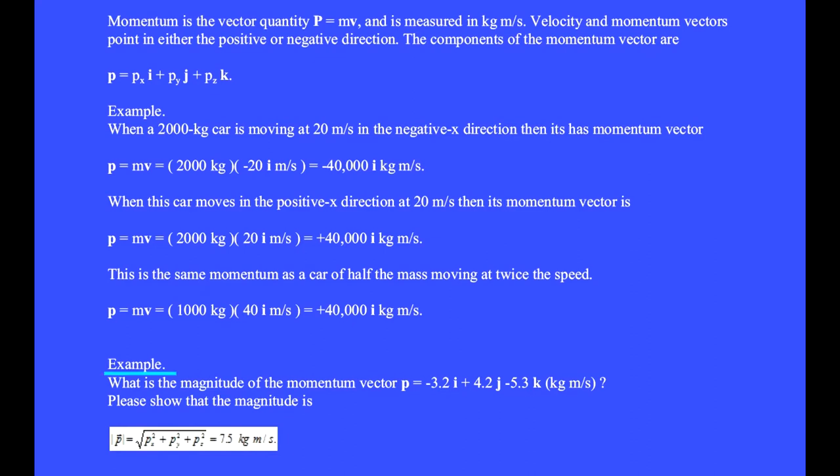For example, what is the magnitude of the momentum vector P equals minus 3.2 i-hat plus 4.2 j-hat minus 5.3 k-hat kilogram meters per second? Please show that the magnitude is 7.5 kilogram meters per second.